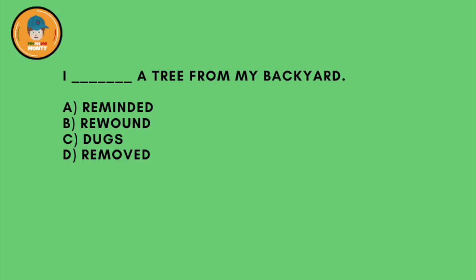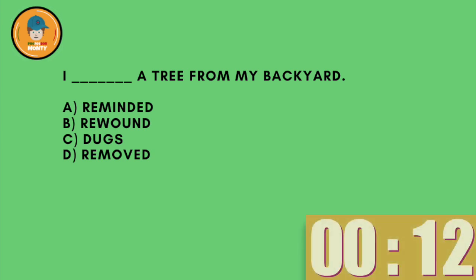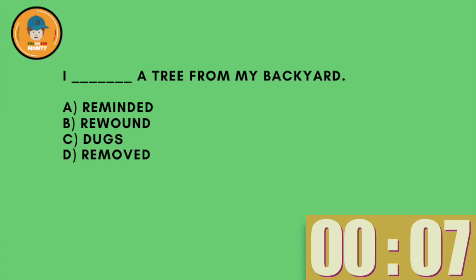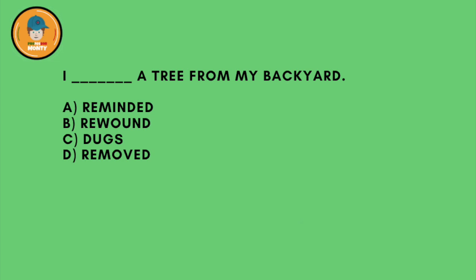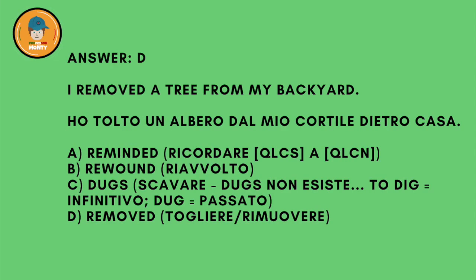Question number one. I mmm a tree from my backyard. A: reminded, B: rewound, C: dugs, D: removed. And the answer is D — ho tolto un albero dal mio cortile dietro casa. I removed a tree from my backyard. Rimuovere.